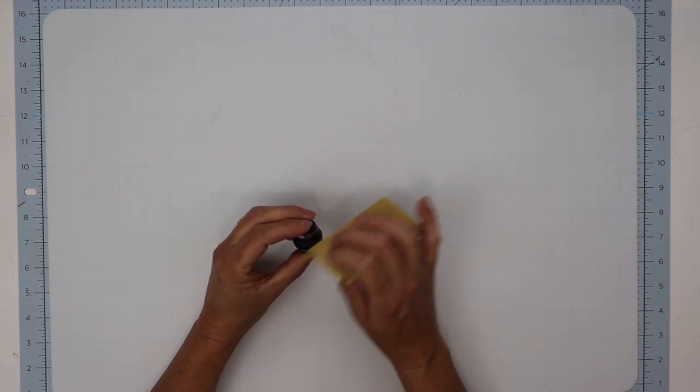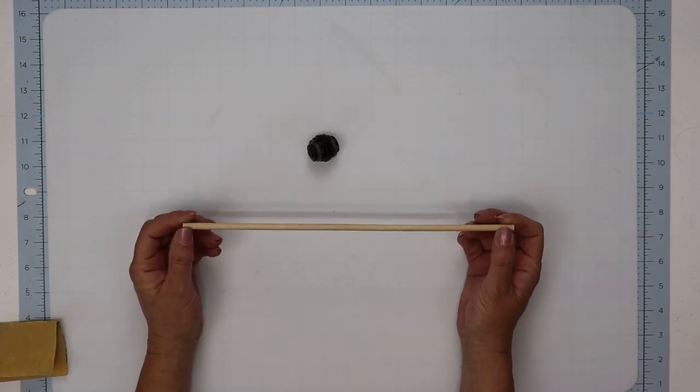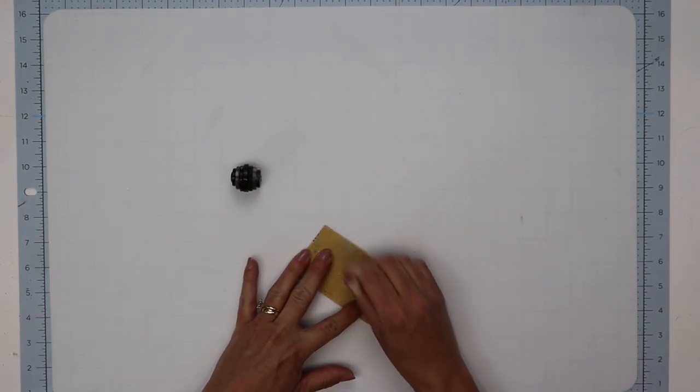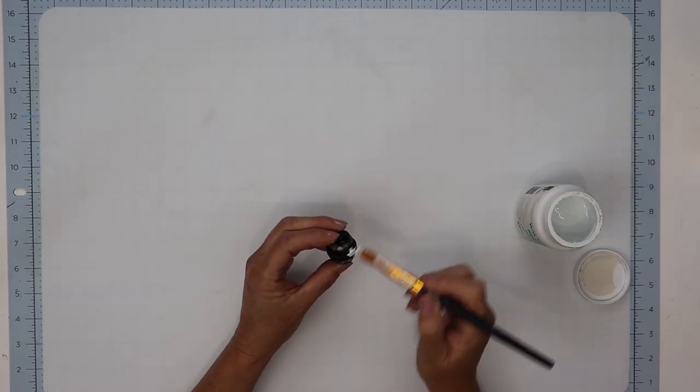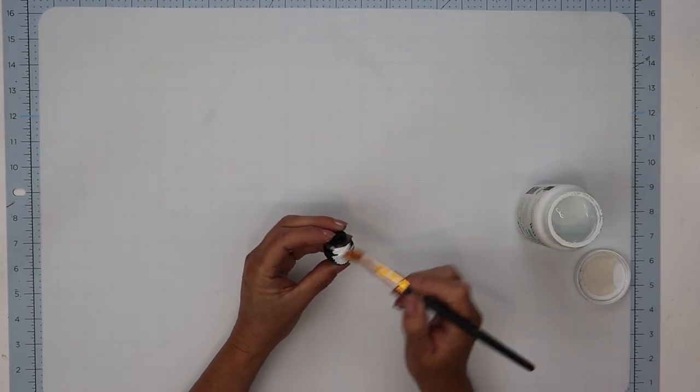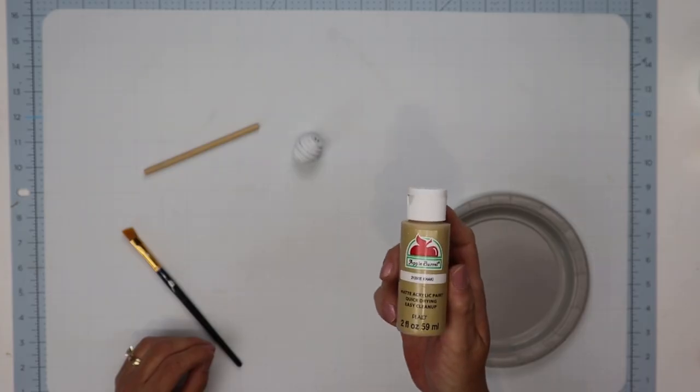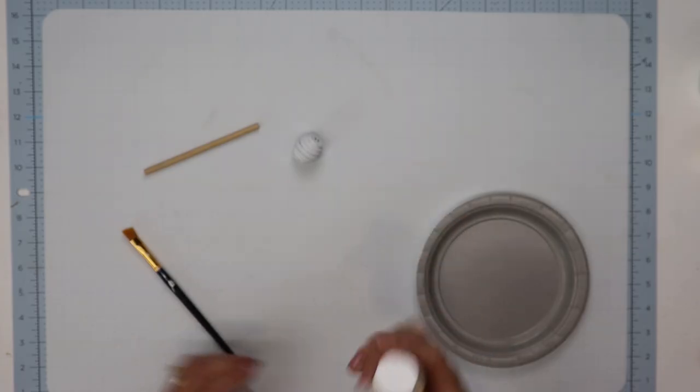Then I took a piece of sandpaper to go around and remove any of the hot glue strands, and I'm also using a wooden dowel. I cut that down and sanded it to make sure it was nice and flat on the end.